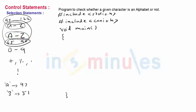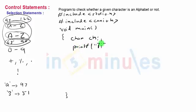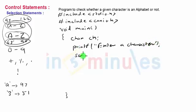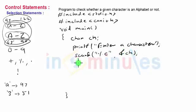The program starts with the normal hash-include commands. We define a character variable: char ch. Then we give a message with printf — 'enter a character' — and input the character using scanf with format specifier %c and ampersand ch.